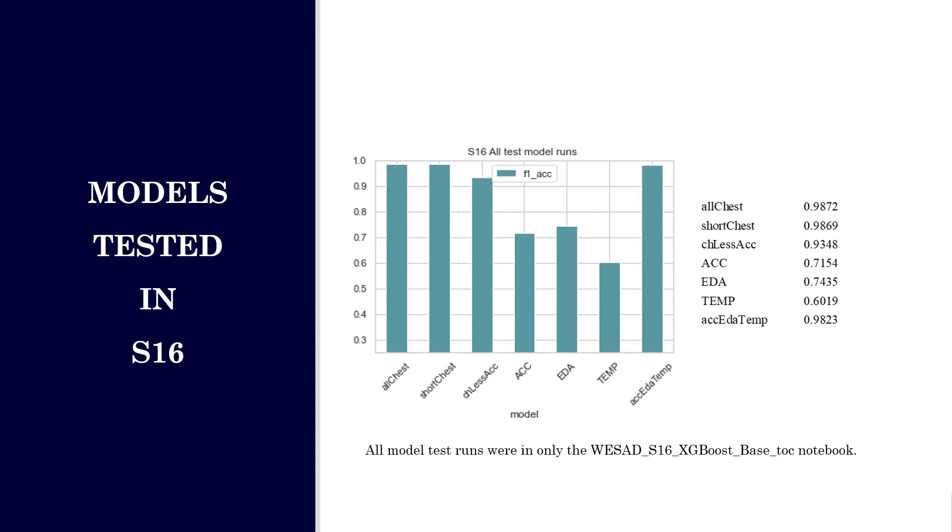Using all sensor features when compared to splitting the sensor data was the best predictor of stress. F1 stress and F1 average for model ACC EDA TEMP was nearly equal to model all chest. Clearly using all chest features produced the best prediction result, and ACC EDA TEMP was a close second.